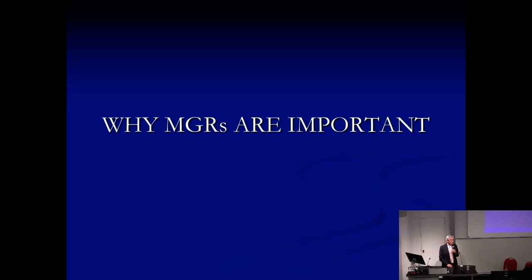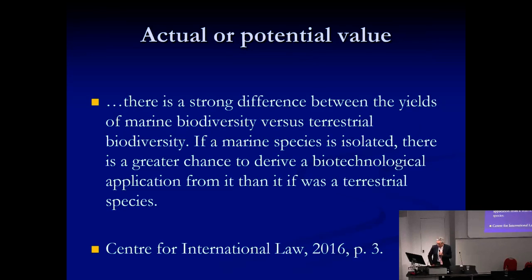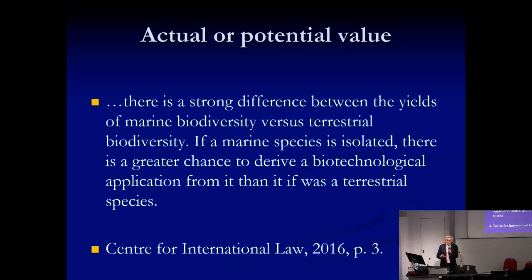Why are marine genetic resources important? There is a lot of literature on these resources, and it agrees on one particular point: the ratio of potentially useful natural compounds is higher in marine than terrestrial organisms. One study produced by the Centre for International Law in Singapore indicated a strong difference between the yields of marine versus terrestrial biodiversity. If a marine species is isolated, there is a greater chance to derive a biotechnological application from it than from a terrestrial species.